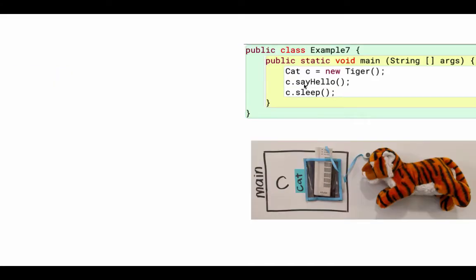I've got the picture of what we have with cat c. Here I've got my main method with my stack frame that keeps track of my local variables. I have the variable name c of type Cat, and it references a new Tiger object.